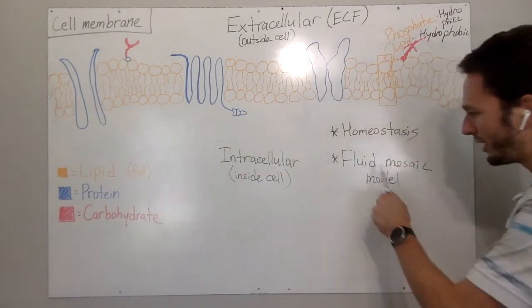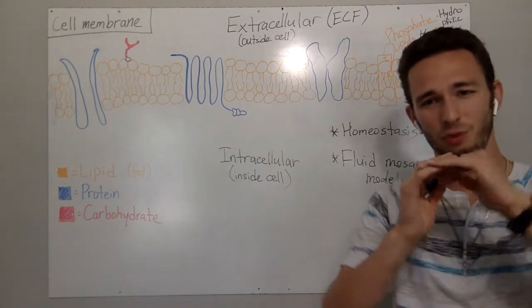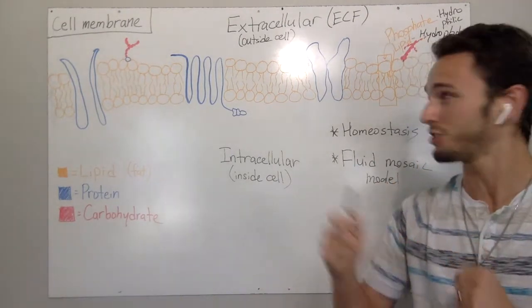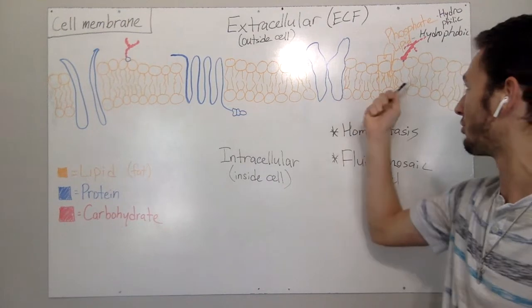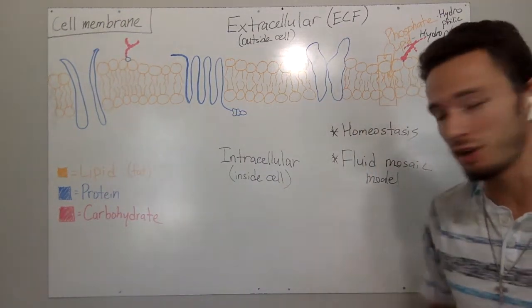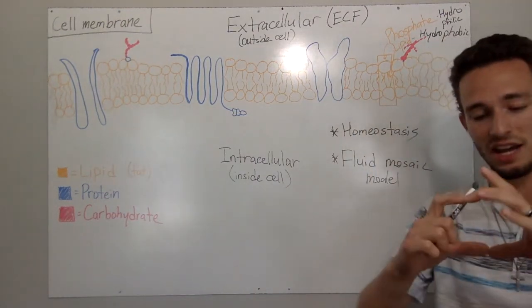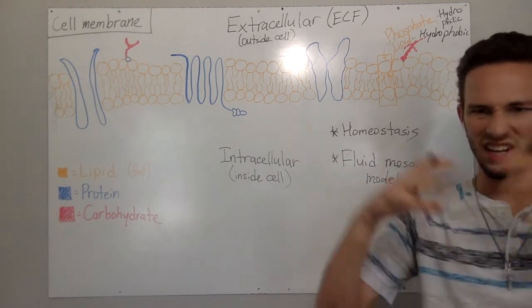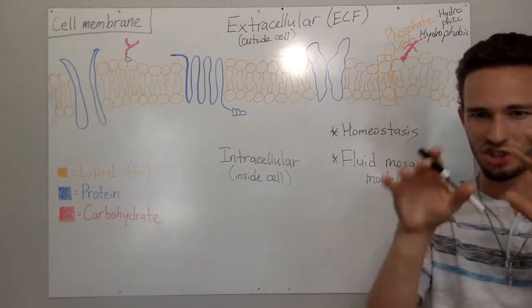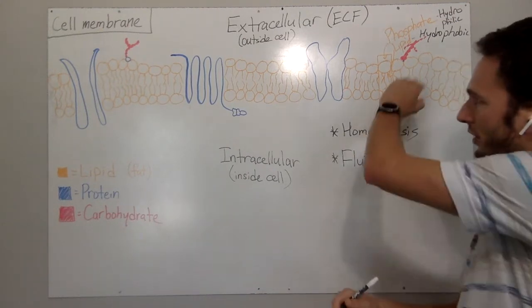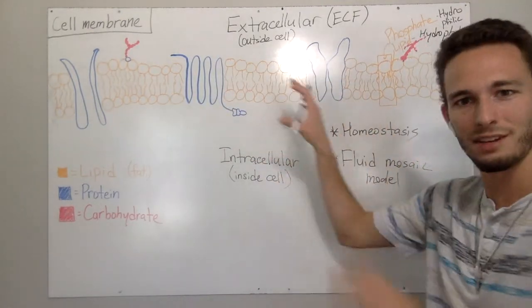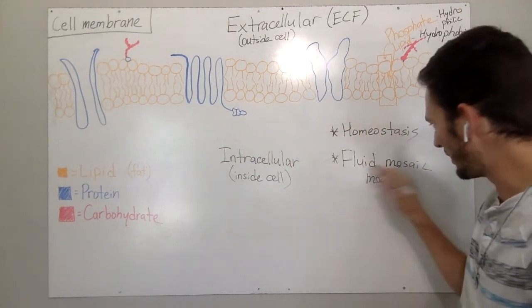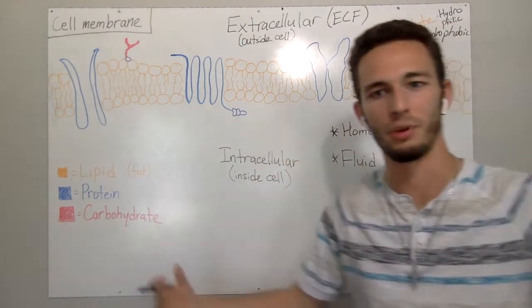Weird name, right? Fluid meaning because it can kind of change its form, change its shape depending on how much cholesterol is embedded in these hydrophobic portions. And mosaic, if you've ever seen a mosaic, it's a beautiful stained glass. It has all these colors and shapes and sizes. Well, you look at the membrane, it's got all these colorful shapes and sizes and different components. So it's a fluid mosaic model of the cell membrane.